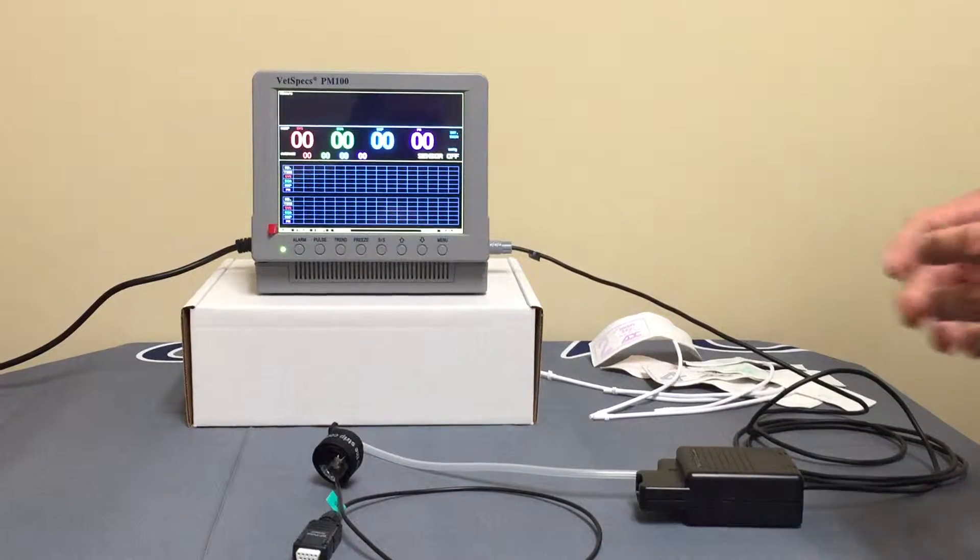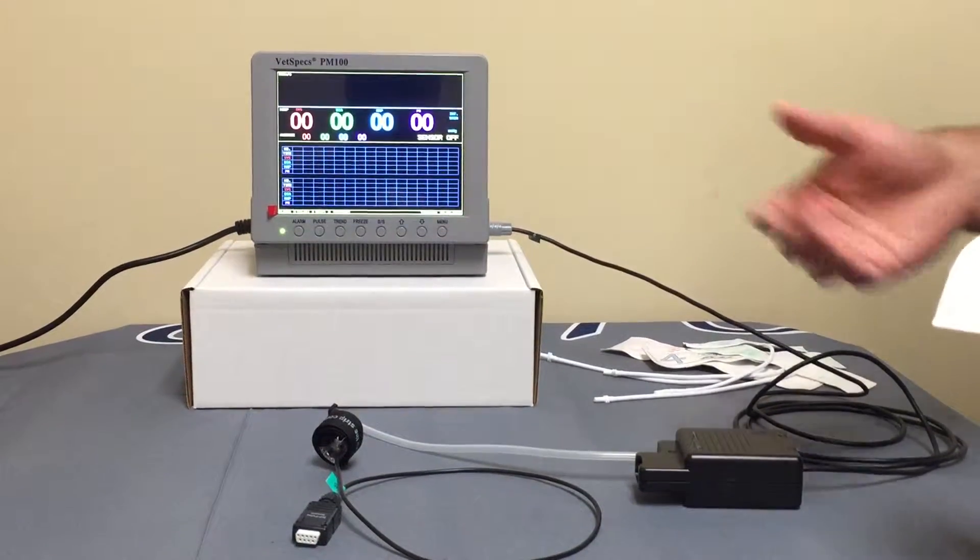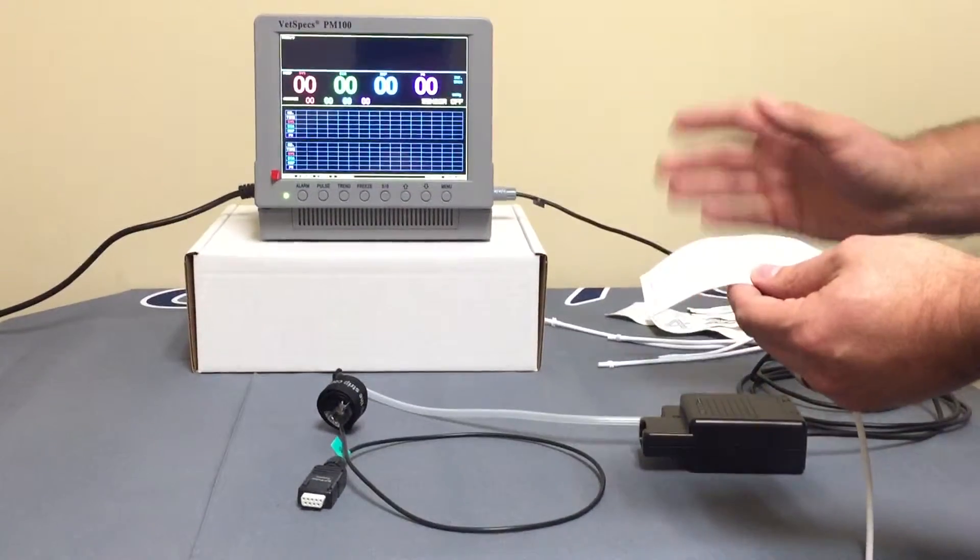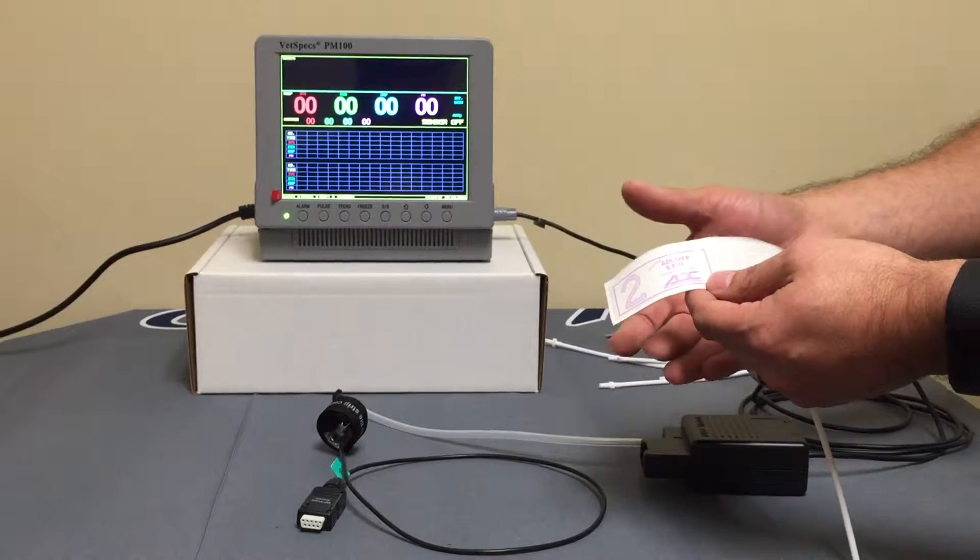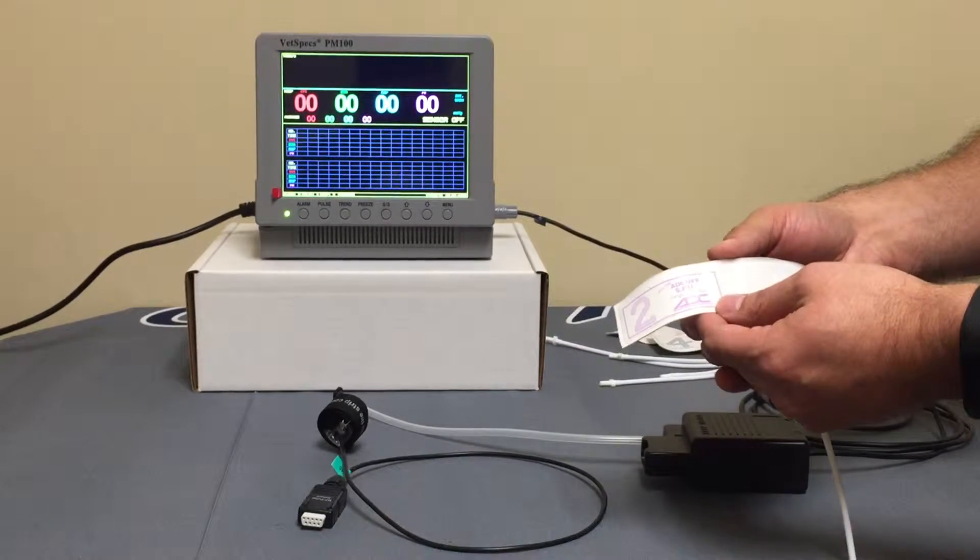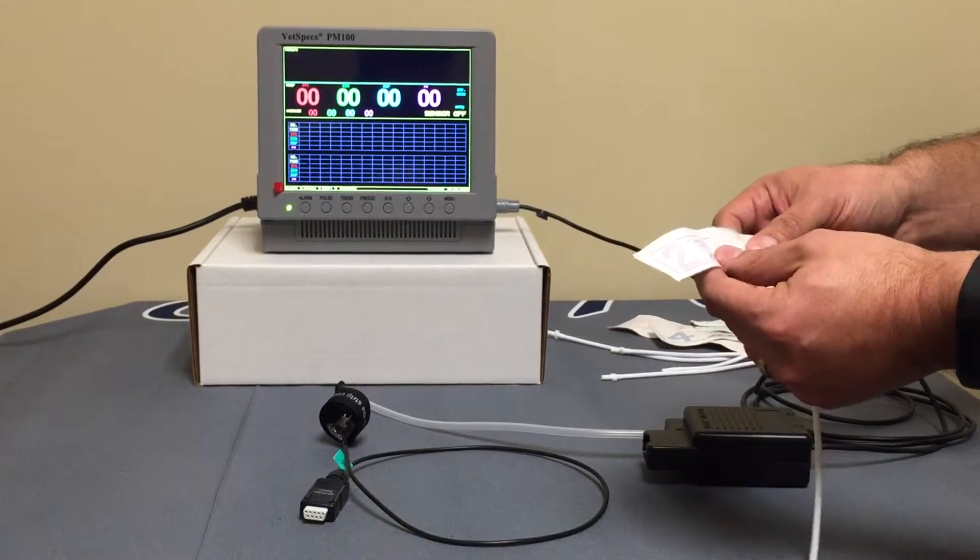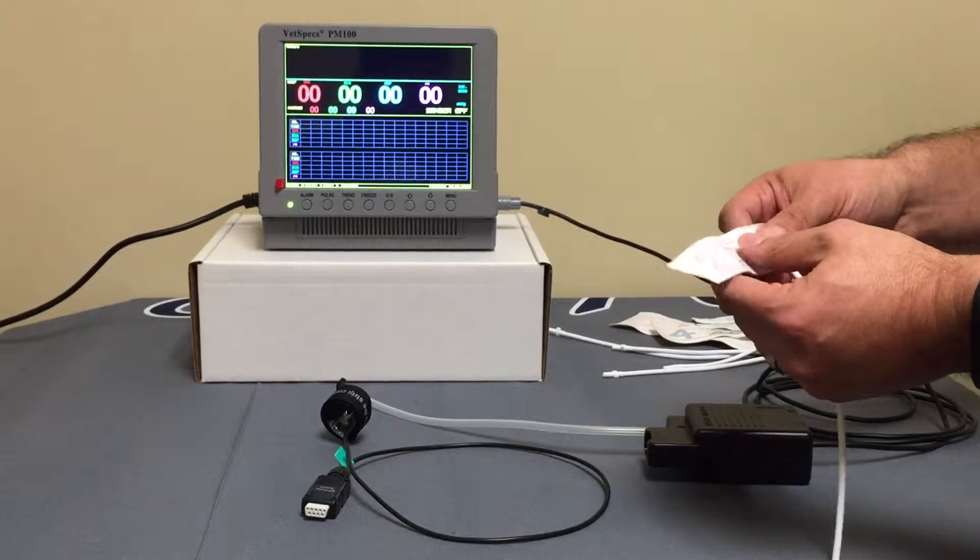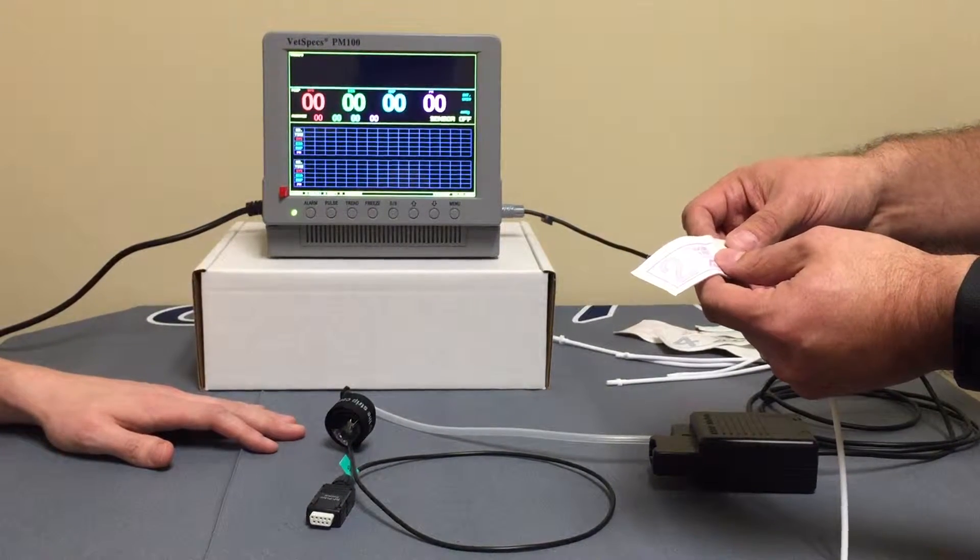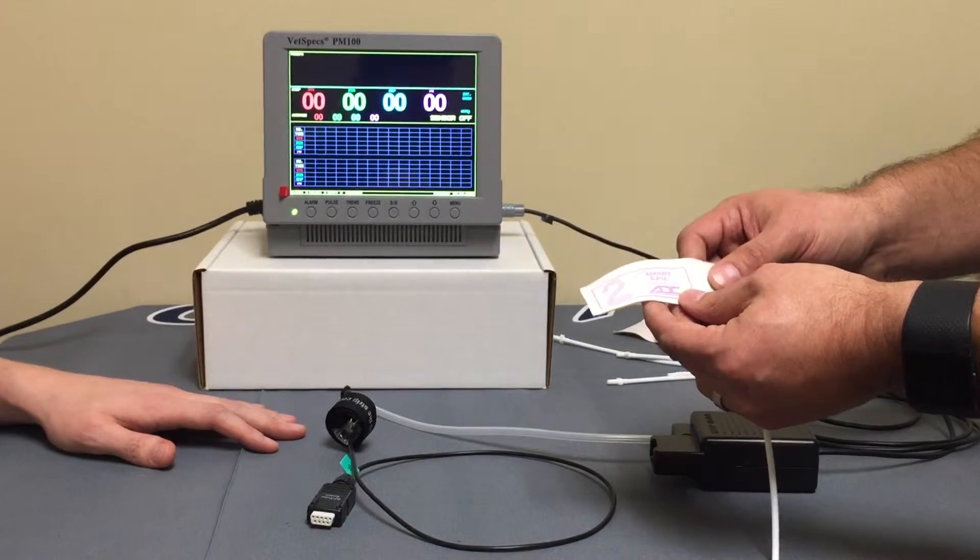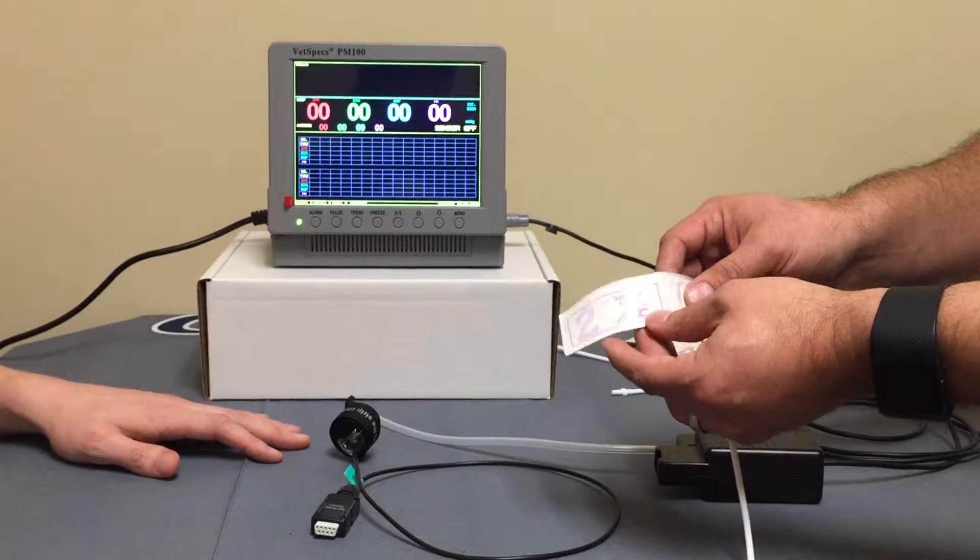I had mentioned earlier as well that VetSpecs provides six different sizes of occlusion cuff. It's really important to make sure that when you choose a cuff, you're providing an occlusion cuff that is proper for the size of the limb that you're going to attach to. So in this case, I've asked my colleague to join me here since we don't have a cat or dog here in the office. We're just going to hook up to his finger and that'll work just as well. I've chosen a number two cuff.